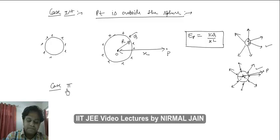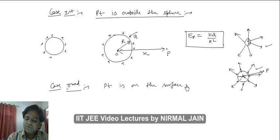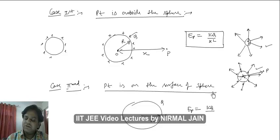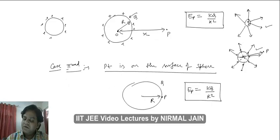Case 2: the point is on the surface of the sphere. This is the sphere having charge q and radius r, with point p on the surface. The electric field at point p can easily be obtained by replacing x with r, so electric field at the surface will be kq by r squared.